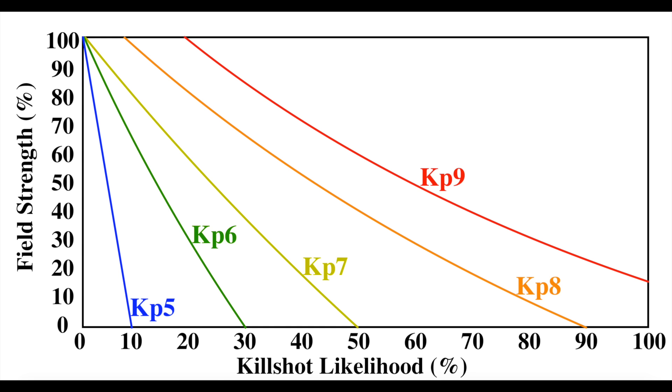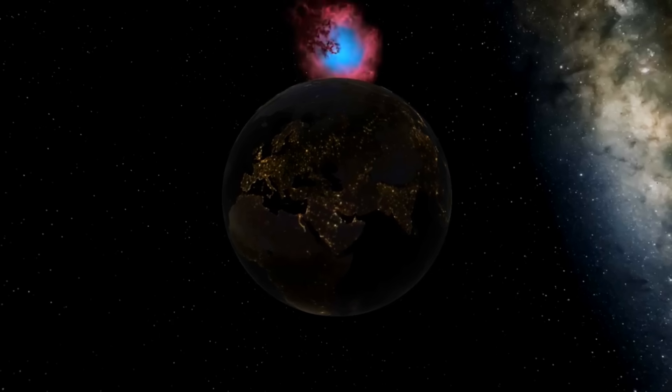The point is that, yes, we are in fact due for the big one from the Sun, but with Earth's magnetic field on the decline, we've got the effects on our bingo card either way.